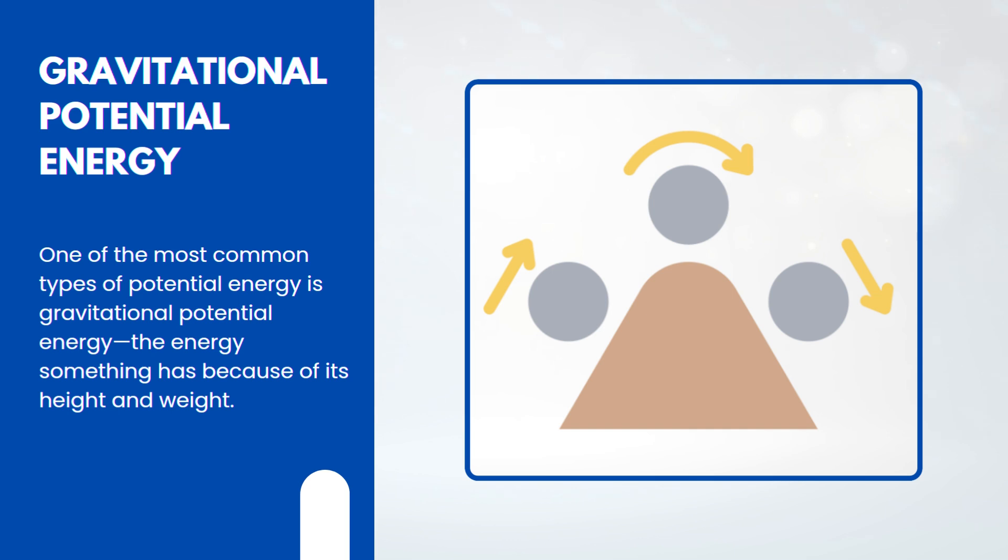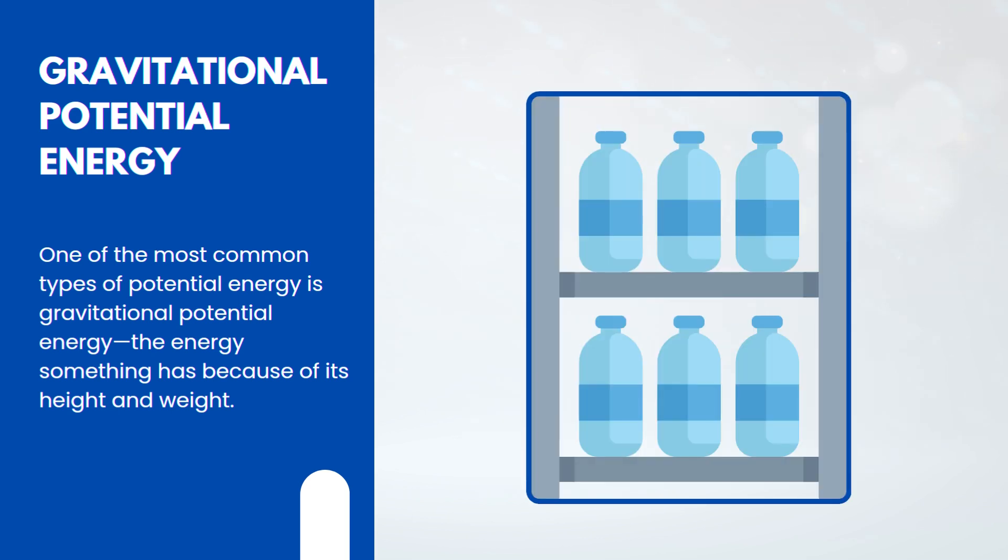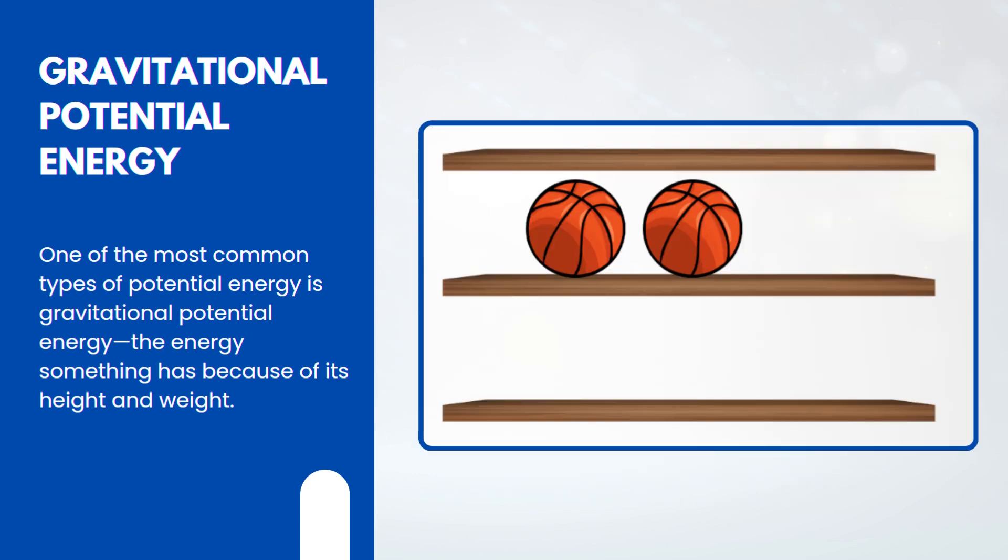The higher something is, the more gravitational potential energy it has. The heavier it is, the more potential energy it has at that height. For example, a water bottle on the top shelf has more gravitational potential energy than one on the bottom shelf.